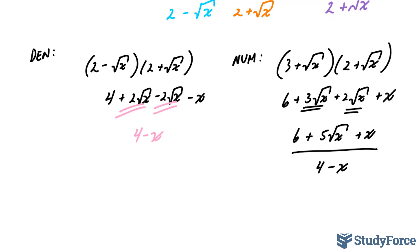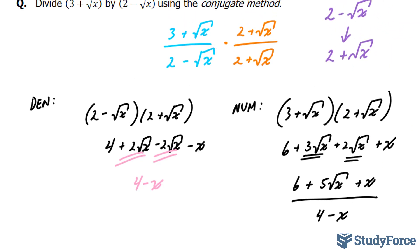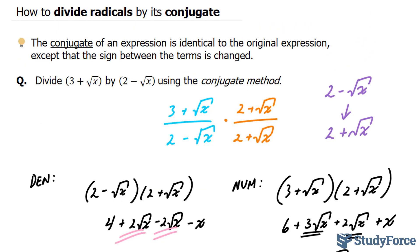The reason why this method is effective is because in the beginning, we had 2 minus the square root of x, where you can't have a radical in the denominator and you can't rationalize either. So by multiplying the numerator and the denominator by the conjugate of the denominator, you end up with an expression that does not contain a radical in its denominator. And there you have it. That is how to divide radicals by its conjugate.